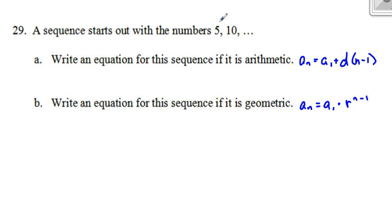In my first case, if I think about it being arithmetic, I have to think what am I adding? Well, I'm adding 5 each time. So in this case, my formula would be a sub n equals 5 plus 5 times n minus 1.